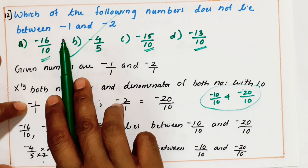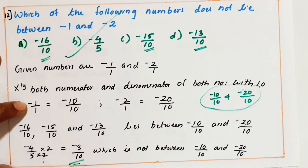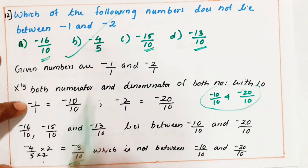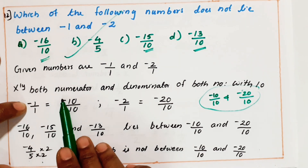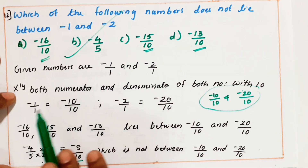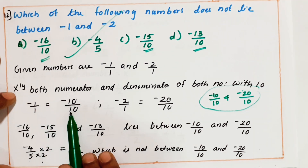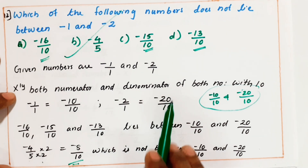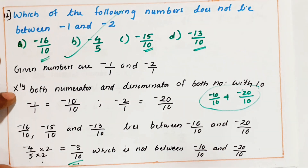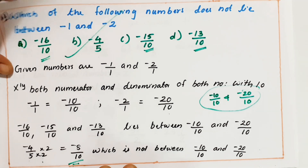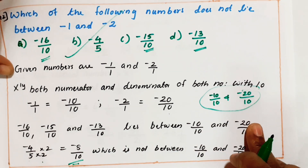How we did it: we got the range minus 1 and minus 2, so I multiplied both numerator and denominator with 10 for both numbers — minus 1 by 1 becomes minus 10 by 10, and minus 2 by 1 becomes minus 20 by 10. Then we understood minus 16 by 10, minus 15 by 10, minus 13 by 10 all lie in the middle. But minus 4 by 5 — multiplying numerator and denominator by 2 gives minus 8 by 10, which does not lie between minus 10 by 10 and minus 20 by 10.